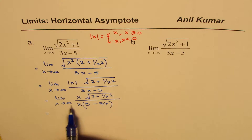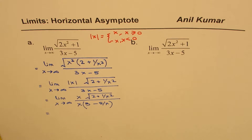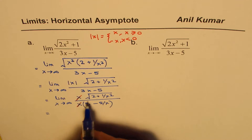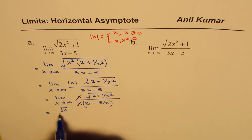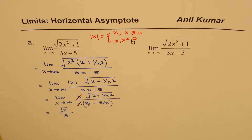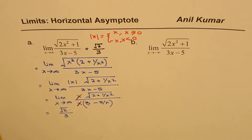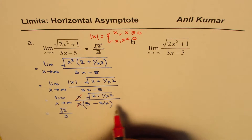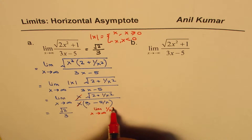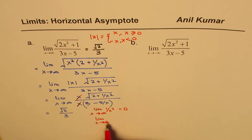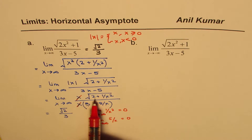If x is approaching a very large number, then 1 over x squared and 5 over x will approach 0. After canceling the x's, we are left with square root of 2 in the numerator and 3 in the denominator. So the limit of this function as x approaches positive infinity is equal to square root of 2 over 3. We can take the limit inside since the limit of 1 over x squared and 5 over x both approach 0.